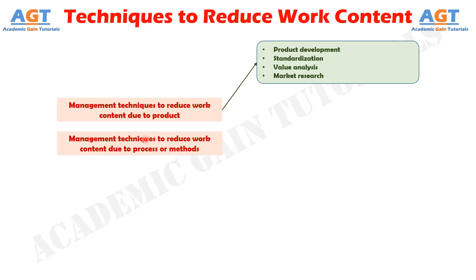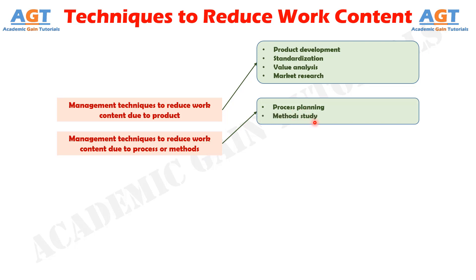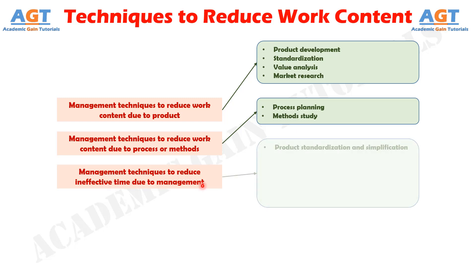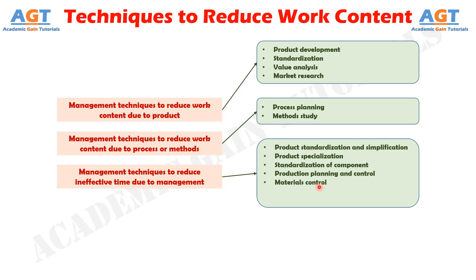Number two: management techniques to reduce work content due to process or methods, including process planning and method study. Number three: management techniques to reduce ineffective time due to management, including product standardization and simplification, product specialization, standardization of components, production planning and control, materials control, plant maintenance, and safety measures and improved working conditions.